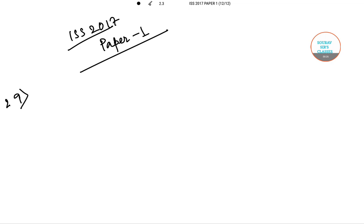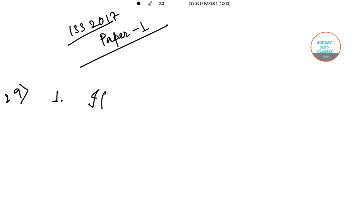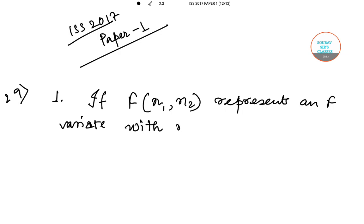In question number 29, we are given consideration of a few statements. The first one is: if F(n1, n2) represents an F variate with n1 and n2 degrees of freedom...